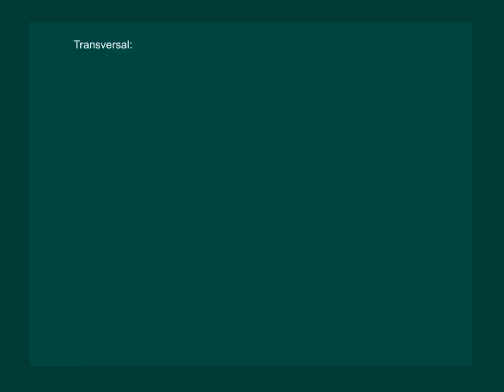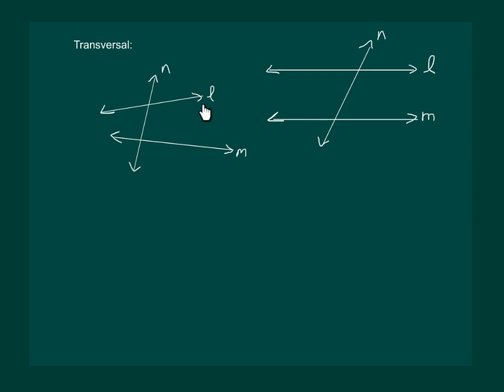Till now we have just talked about a pair of lines. But consider a situation when two lines L and M are intersected by another line, then the intersecting line is called a transversal.